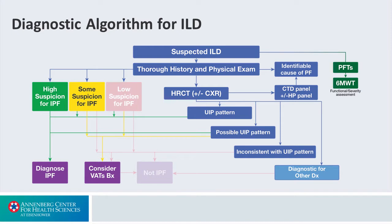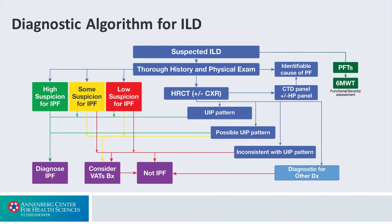Whereas if there's only some suspicion, or only a possible UIP pattern, we move into considering a biopsy by video-assisted thoracoscopic approach. And then on the red line, if there's an inconsistent pattern on CT scan, this is where we're going to consider alternative diagnoses.